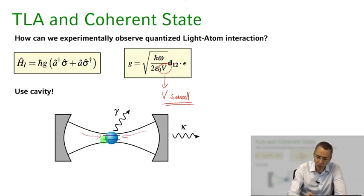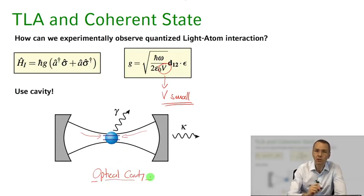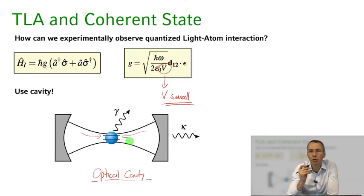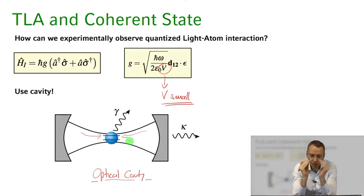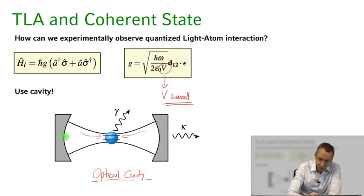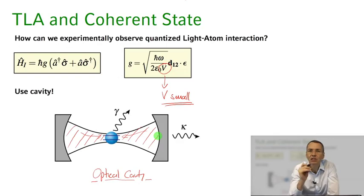In this optical cavity setup we confine the light field, and by bouncing back and forth between the two mirrors it will interact very often with our two-level atom. The cavity modes are defined by boundary conditions set by the two mirrors, and we want the volume covered by these modes to be as small as possible to achieve the highest possible vacuum Rabi coupling.